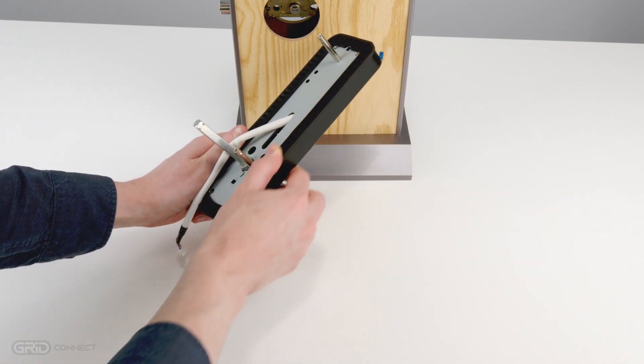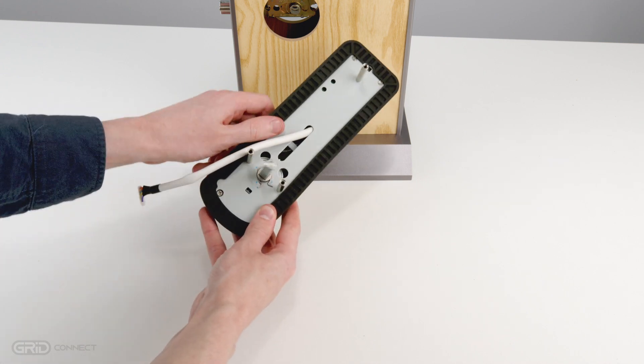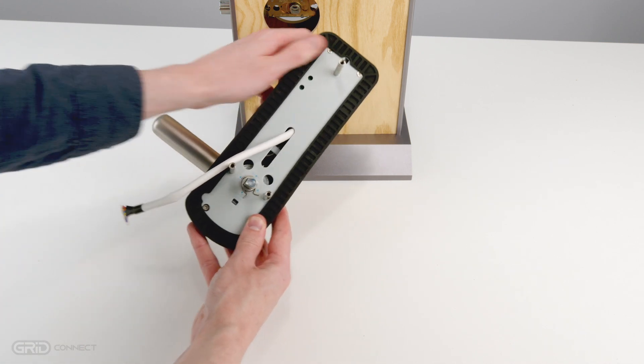The front panel should come with the rubber seal attached. If it's not, align the seal with the front panel and press firmly around the edges.